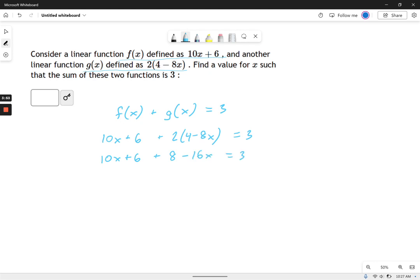And now I keep on going. 10x and negative 16x are going to combine to make negative 6x. 6 and 8 combine to make 14. See, this is getting simpler pretty fast.